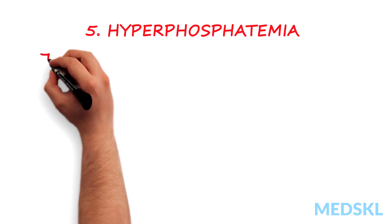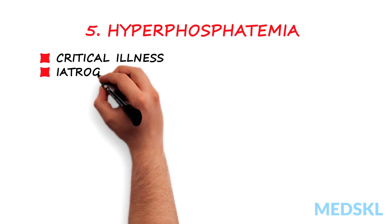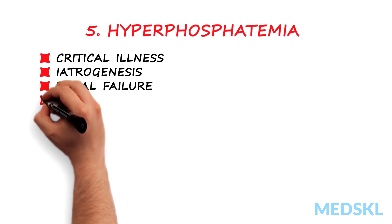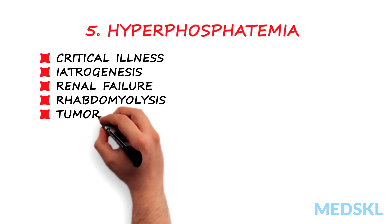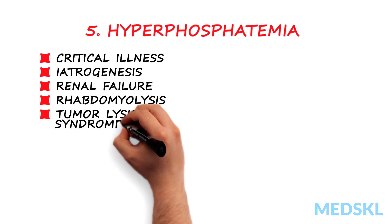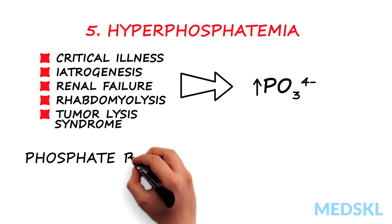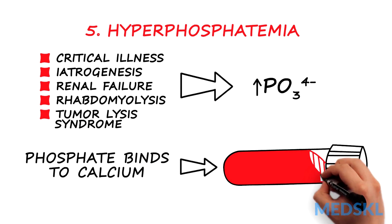Hyperphosphatemia. Conditions such as critical illness, iatrogenesis, renal failure, rhabdomyolysis, and tumor lysis syndrome will result in phosphate bonding to calcium, causing hypocalcemia.